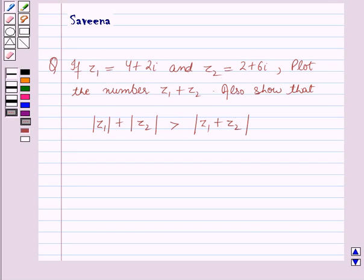Hello and welcome to the session. In this session we will discuss a question which says that if the complex number Z1 is equal to 4 plus 2 iota and the complex number Z2 is equal to 2 plus 6 iota, plot the number Z1 plus Z2. Also show that modulus of Z1 plus modulus of Z2 is greater than modulus of Z1 plus Z2.